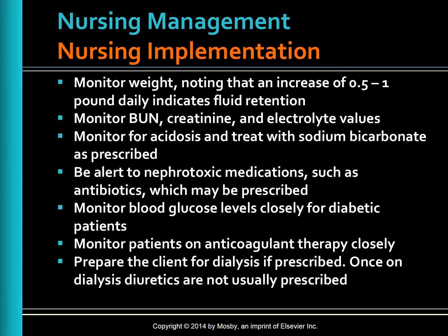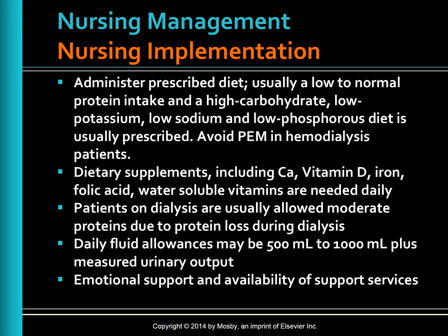Prepare the client for dialysis if prescribed. Once on dialysis, diuretics are not usually prescribed. Administer the prescribed diet — usually low to normal protein intake with high carbohydrate, low potassium, low sodium, and low phosphorus. Avoid protein energy malnutrition (PEM) in hemodialysis patients. Dietary supplements including calcium, vitamin D, iron, folic acid, and water-soluble vitamins are needed daily. Patients on dialysis are usually allowed moderate protein due to protein loss during dialysis. Daily fluid allowances may be 500 to 1000 mL plus the measured urinary output from the previous 24 hours. Emotional support and availability of support services play an important role.